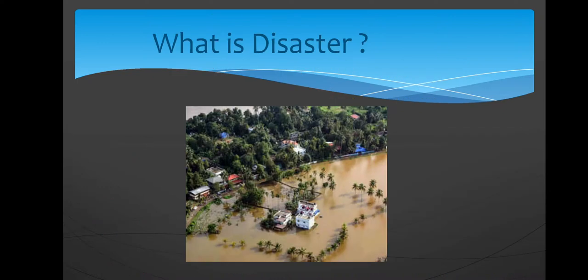Disaster. What is disaster? A disaster is a sudden calamitous event that seriously disrupts the functioning of a community or society and causes human, material and economic or environmental losses that exceed the community's or society's ability to cope using its own resources. Too often caused by nature, disaster can have human origins.